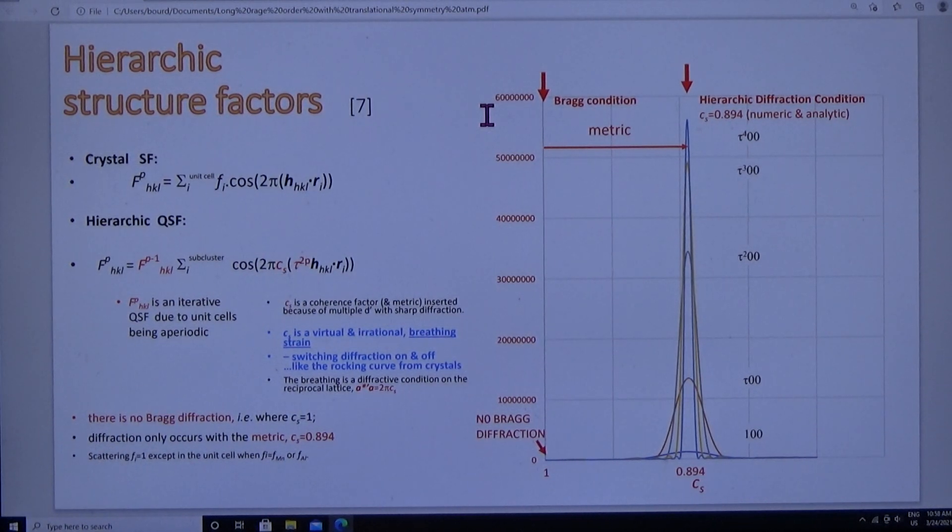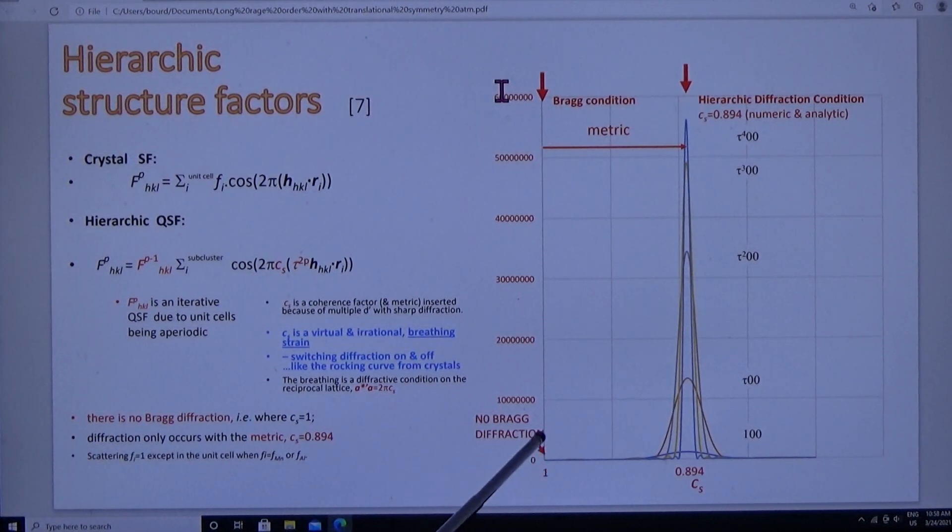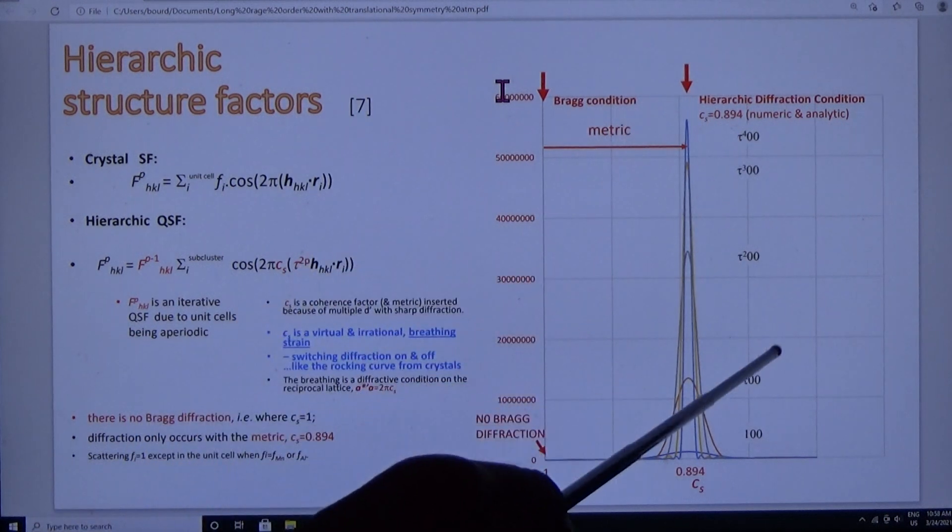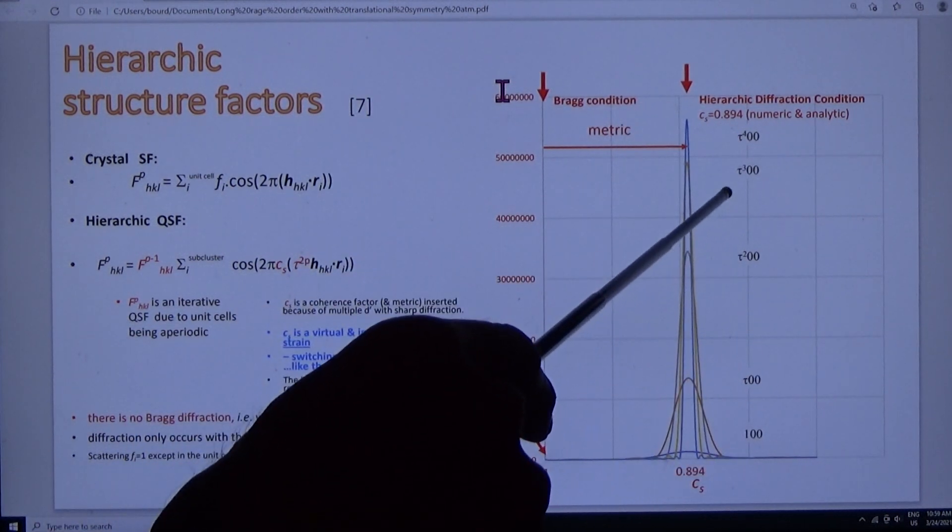The QSF, quasistructure factor for supercluster order P, is equal to the QSF for order P minus 1, multiplied by this function for the phases based on the stretching factor. And what is the answer? There is no Bragg diffraction. If there were Bragg diffraction, it would occur on the ordinate axis, where Cs equals 1.